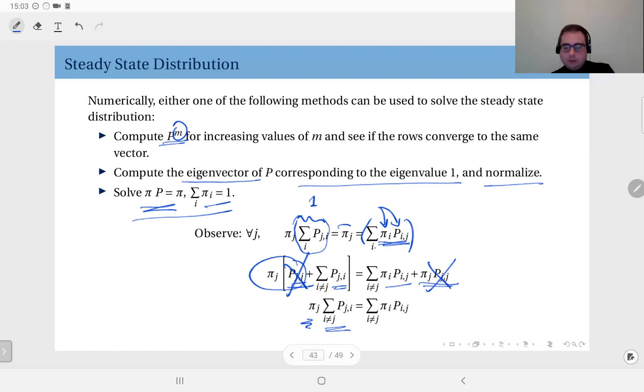Over all i values, and here the sum over all i values which are different than j: πᵢ times pᵢⱼ. You see you have here πⱼpⱼᵢ's and here pᵢⱼ's.